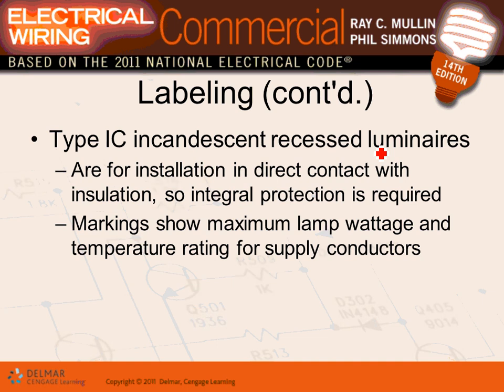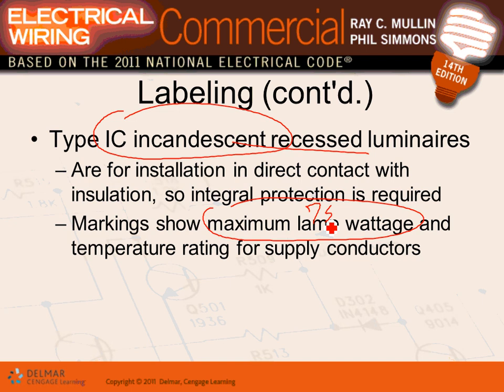If you have a fixture rated IC, that means you can go ahead and dump all the insulation on top of it — it can be completely immersed in insulation. There's something called maximum watts: if they tell you the maximum wattage for a fixture is 75 watts, you shall not install 100 watts. Any fixture — if they tell you the maximum watt you can put, especially in cans and lamps, you shall not exceed that. If it says 75, you're limited to 75.